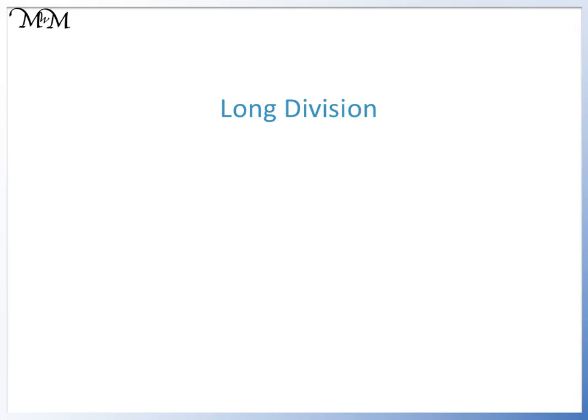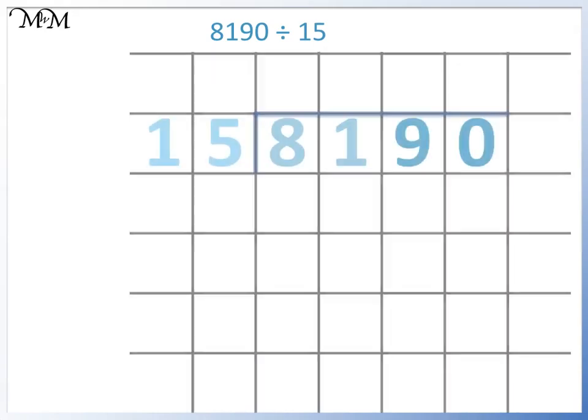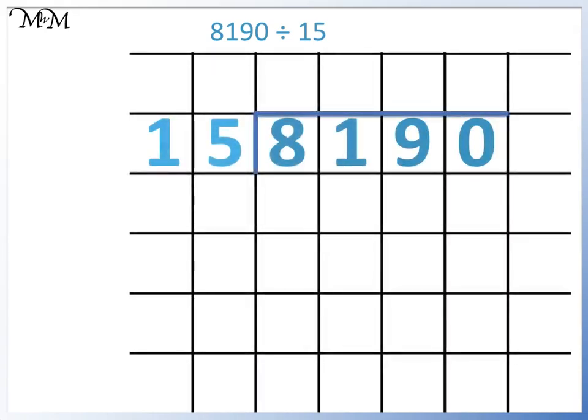Hi and welcome to our lesson on long division. Here we have 8190 divided by 15. We set it out like so. We want to divide 15 into all of the digits of 8190, working from left to right.